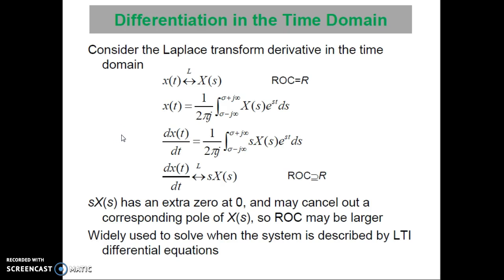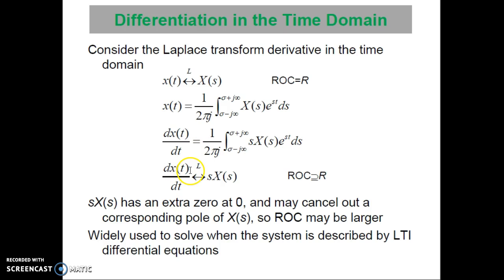The next important property is differentiation in the time domain. Using the inverse Laplace formula, d by dt of x of t equals 1 upon 2 pi j, integration from sigma minus j infinity to sigma plus j infinity, of s into x of s into e raised to st into ds. So, differentiation in the time domain results in multiplication by s in the s domain.